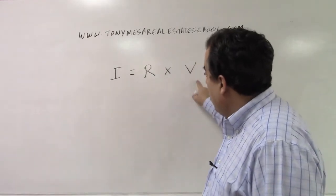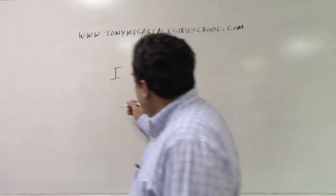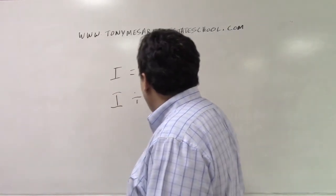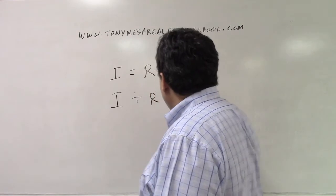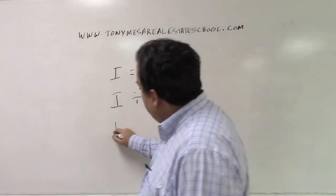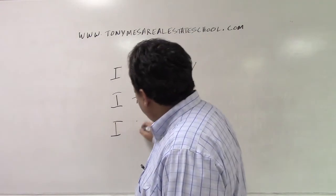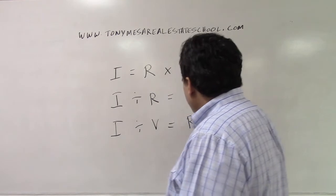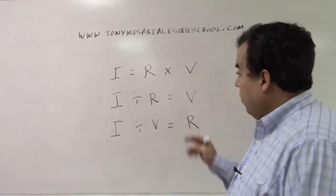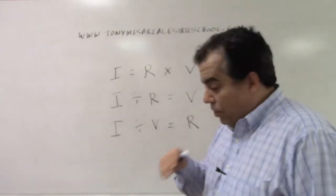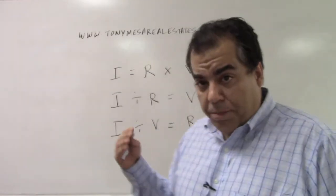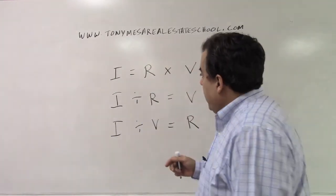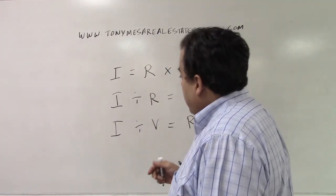So with I = R × V, that means I ÷ R = V, and I ÷ V = R. Whichever variable you're solving for will be alone on one side of the equal sign.